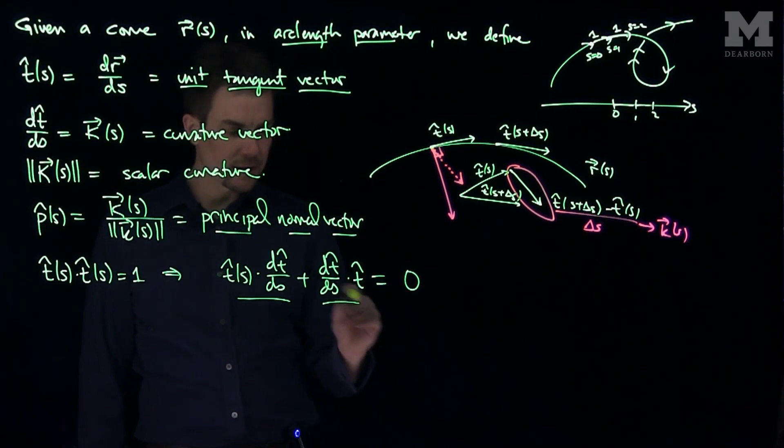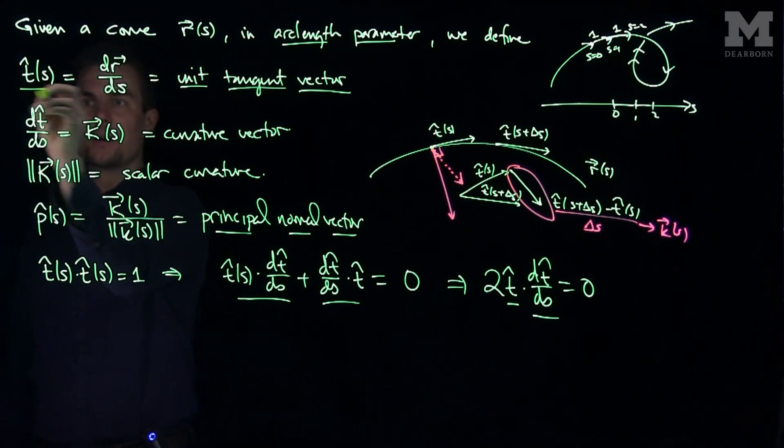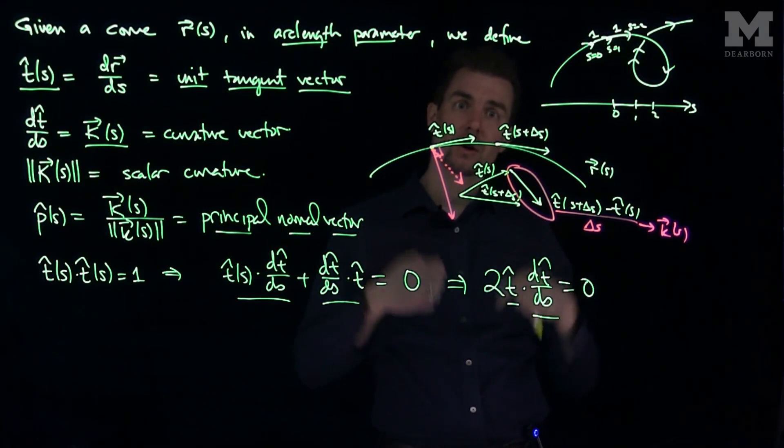Now the dot product is commutative, so both those are the same. So we have that two t hat dot dt/ds is equal to zero. So t and dt/ds are perpendicular. So t, the tangent vector, and the curvature vector are perpendicular to each other, and the curvature vector points into the curve.